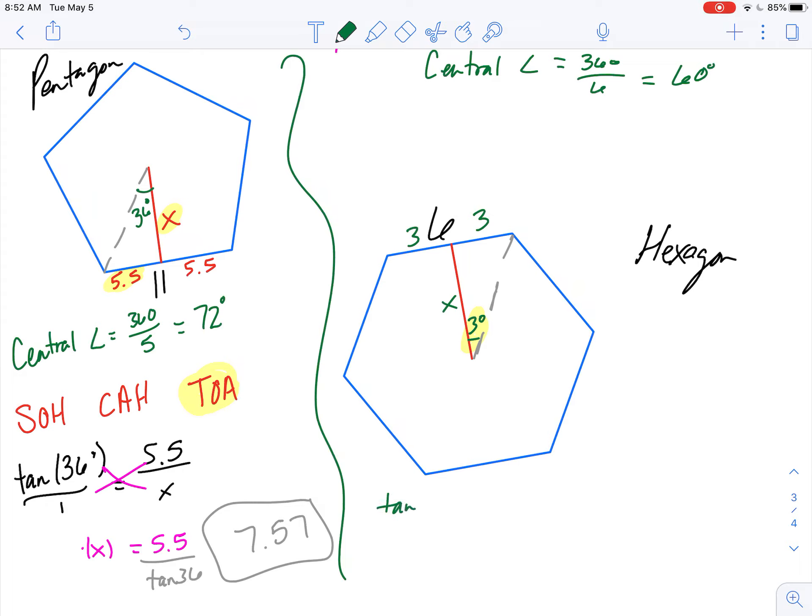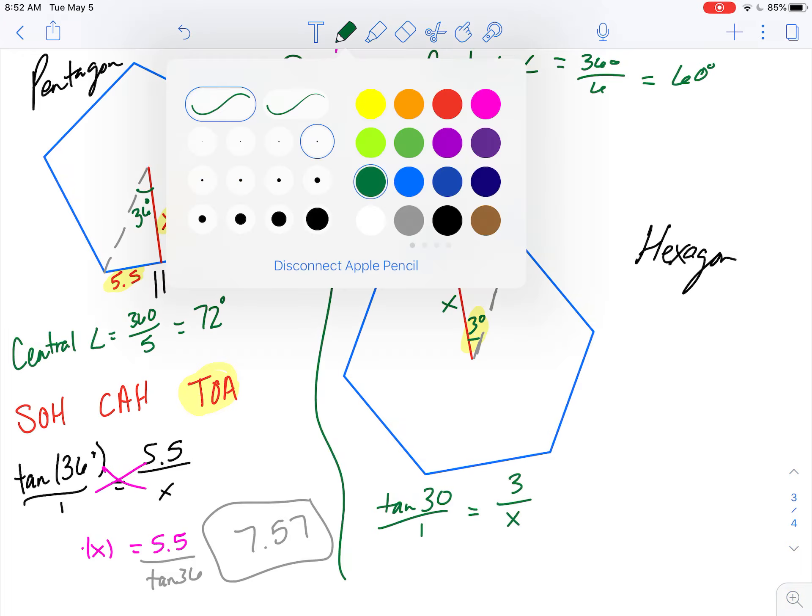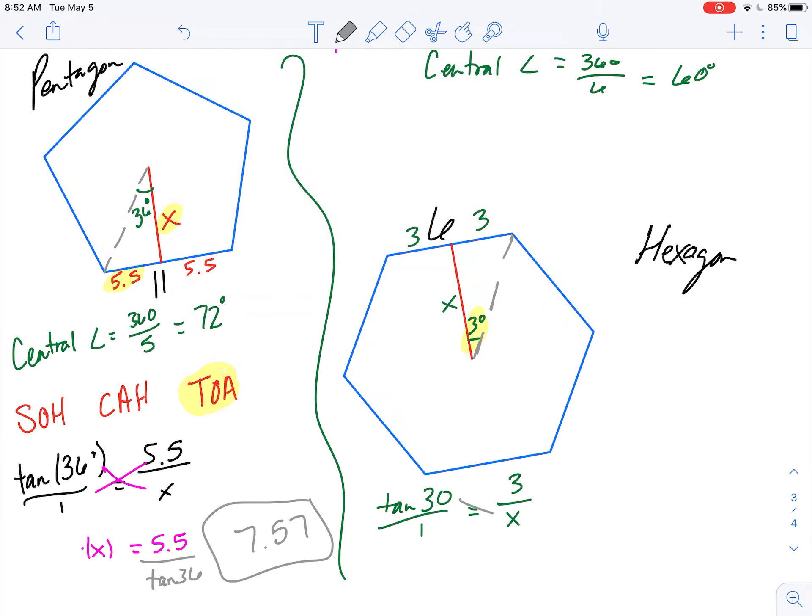So tangent of 30 equals opposite over adjacent. And then we can cross multiply, and we get x times the tangent of 30 equals 3.